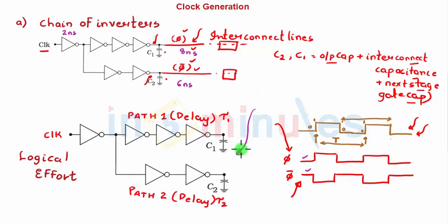And I've shown that we want the same delay to be achieved in this path and the same delay to be achieved in this path also, which means that either phi and phi bar both come at six nanoseconds or both come at eight nanoseconds. Basically, I want both of them to come at the same time.